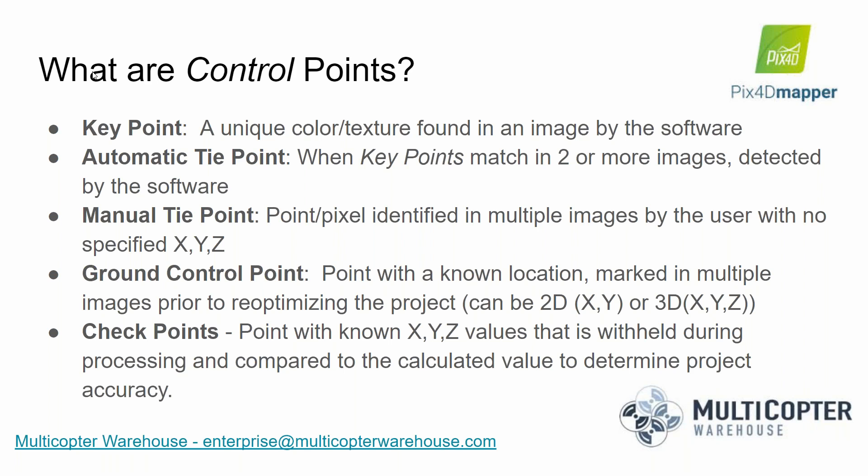The last type of point is a checkpoint. A checkpoint is just like a ground control point — a point marked in multiple images with an XYZ value — but with a checkpoint, this data is withheld from the software during processing. Afterwards, you use it as a check to see how close the computed value comes to the known value, which tells you the accuracy of your project. You'll want both ground control points and checkpoints to validate accuracy.